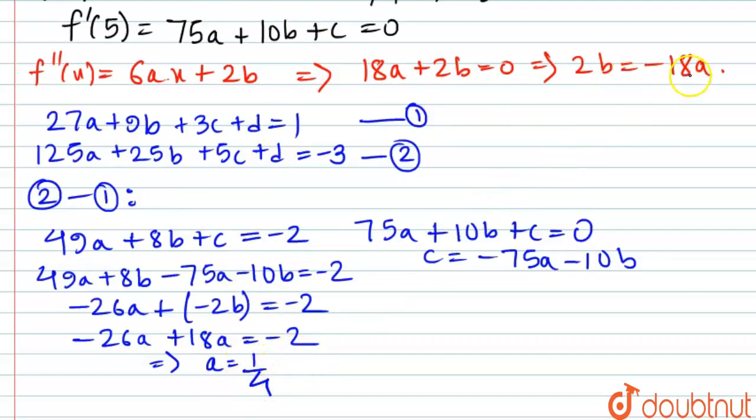So a is 1/4, then b is -9/4. Now if we just put in the values of a and b here, 1/4 and -10 times -9/4, we get c to be finally 15/4.